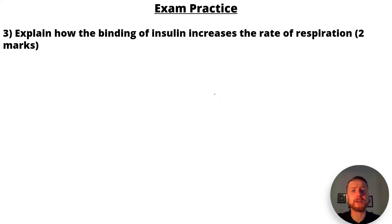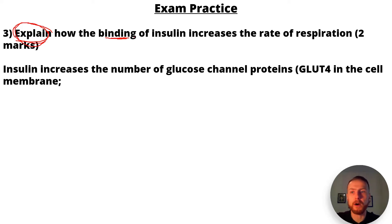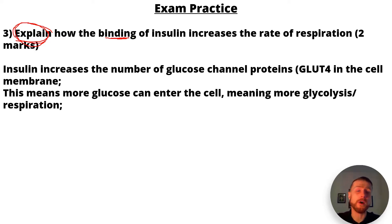Question three: explain how the binding of insulin increases the rate of respiration. Remember, explain means give reasons. First mark: insulin increases the number of glucose channel proteins, also called GLUT4. Second mark: therefore more glucose can enter the cell, meaning more glycolysis and respiration — because more glucose leads to more glycolysis.